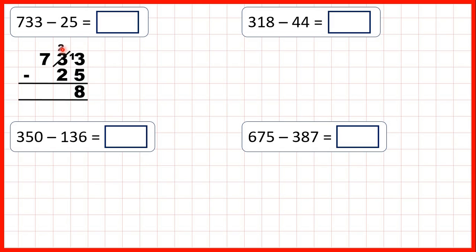Now we can move on to our tens column, and because we exchanged, we have 2 minus 2, which is 0. Now onto our hundreds, we have 7 minus nothing, so we have 7, which means our answer is 708.